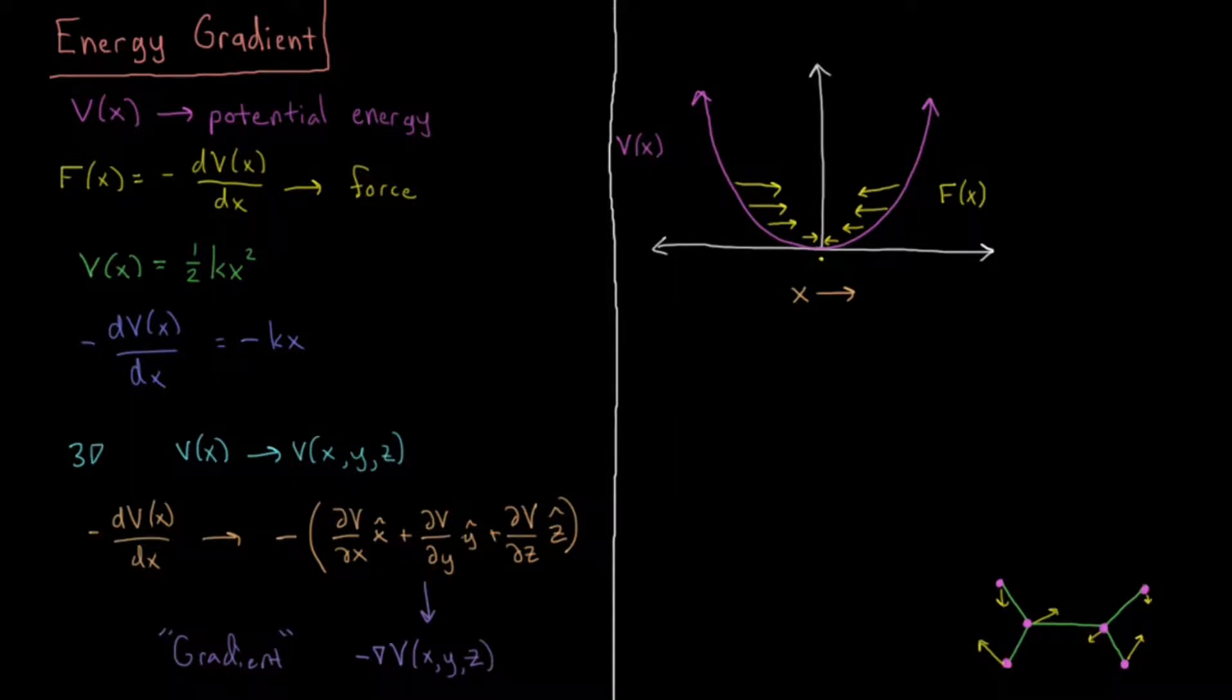Now, how do we generalize that to n atoms, or 3n coordinates? So as I said, for n atoms, a general system will have some number n atoms.